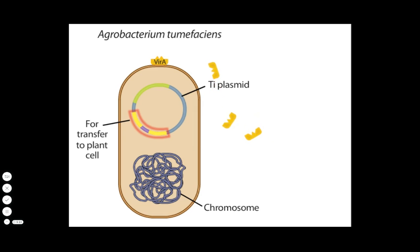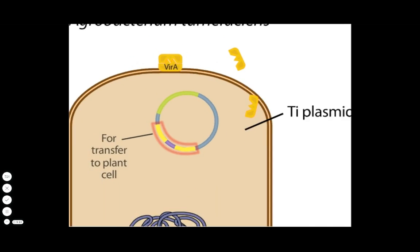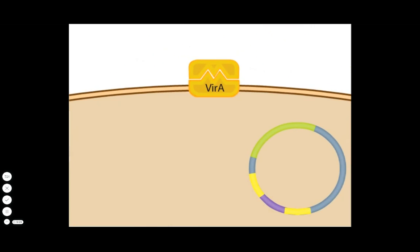In the cell envelope, a protein called VIR-A detects the chemical signal from the wounded plant. The binding activates VIR-A, which can then activate another protein called VIR-G through phosphorylation.